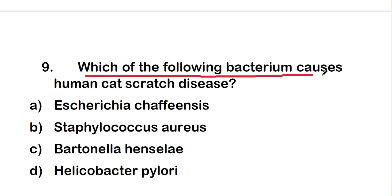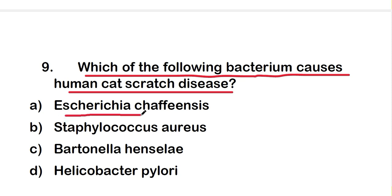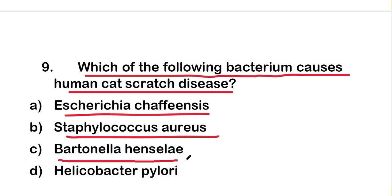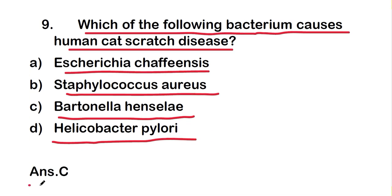Which of the following bacterium causes human cat scratch disease? The options are Ehrlichia chaffeensis, Staphylococcus aureus, Bartonella henselae, or Helicobacter pylori. The right answer is option C — Bartonella henselae — which causes human cat scratch disease.